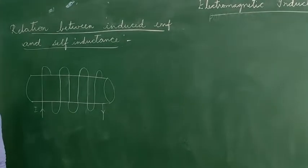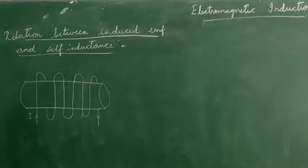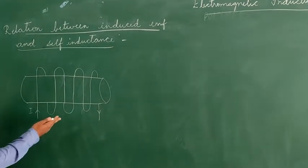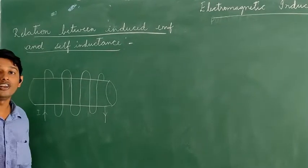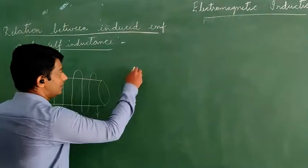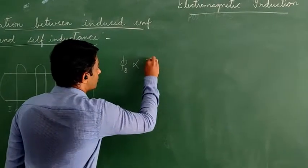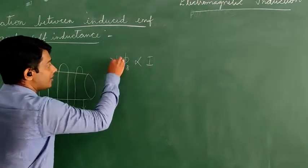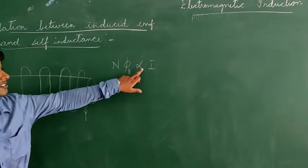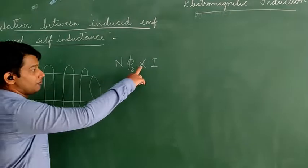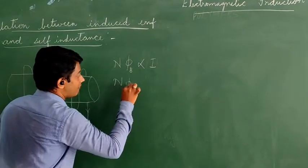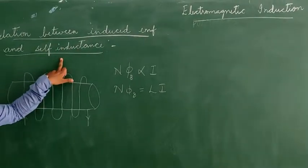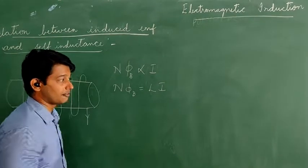The next topic is the relation between induced EMF and self inductance. The magnetic flux φ is directly proportional to current I in the same coil. So Nφ is directly proportional to I. Removing the proportionality symbol, Nφ equals LI, where L represents the self inductance or coefficient of self inductance.